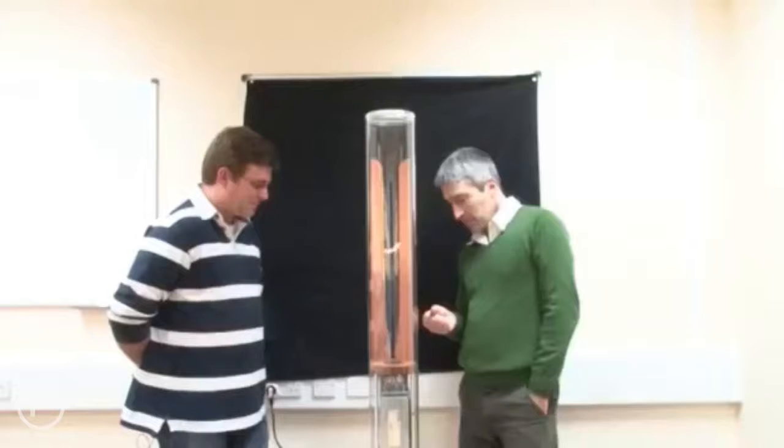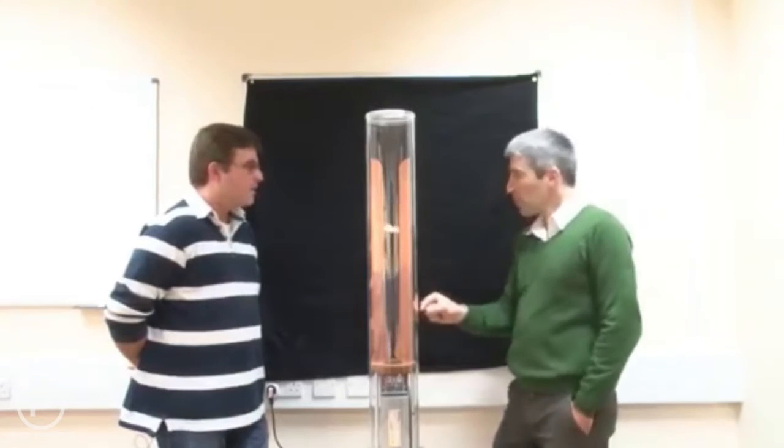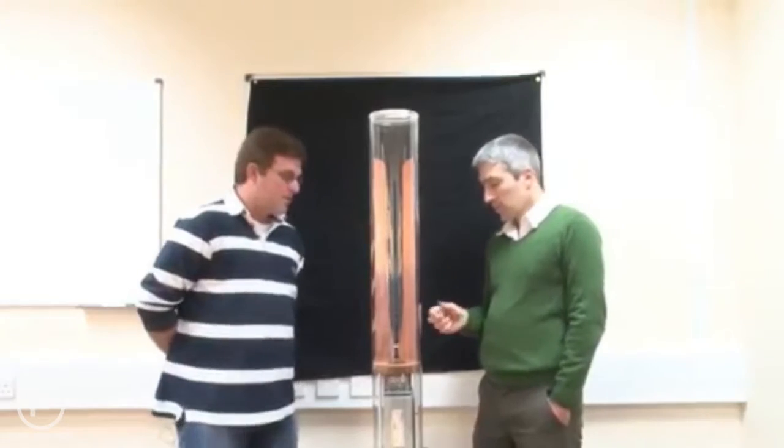Right. And this arc rises to the top where the gap gets too big in order to sustain the arc. Right. So it starts at the bottom where there's a small gap. That's right. But why does it go up?